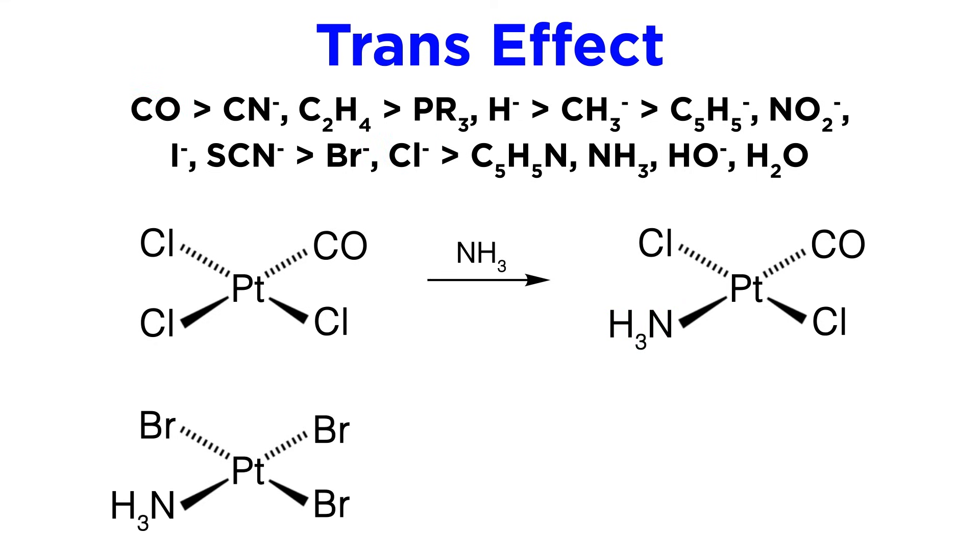Then let's try this other platinum complex, with ammonia and three bromides as ligands. Where will the next ammonia go? Here, bromide beats ammonia, so although ammonia could replace itself, that would not yield a new product. So instead, let's have one of these bromides that are cis to ammonia do the directing, and the new ammonia ligand will go here.